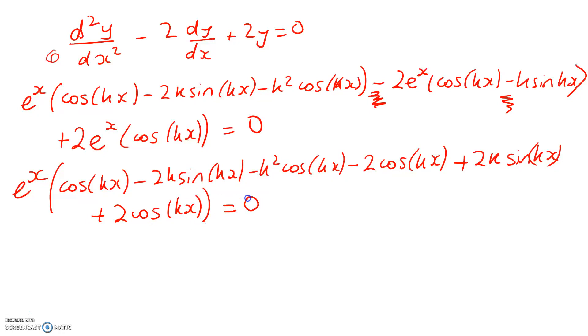So there are some things that are going to disappear, which is really nice. And I'm going to underline them so that you see them. I've got minus 2k sine kx plus 2k sine kx. And I've got minus 2k minus 2 cos kx plus that. So the whole thing collapses now to give me this. E to the x times cos of kx minus k squared cos of kx equals zero.